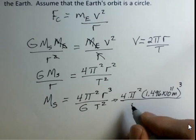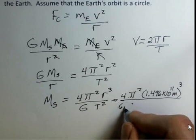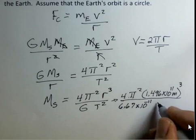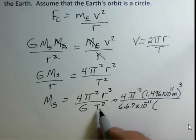And then capital G, I'll go ahead and put in its number: 6.67 times 10 to the negative 11th for standard metric units. And then the time...